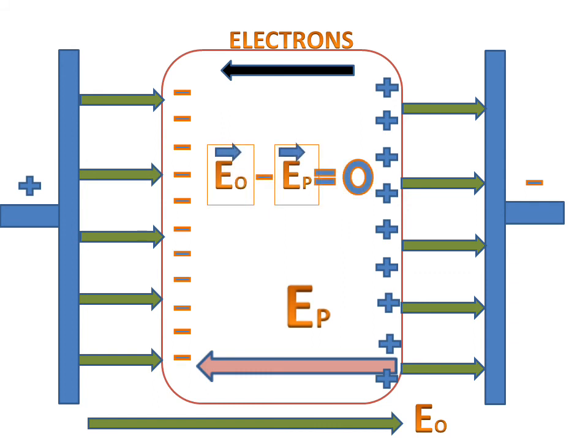When we subtract them, E_O minus E_P equals zero. This means that inside a conductor, the electric field is zero. So this explains why the electric field inside a conductor is zero. Thank you.